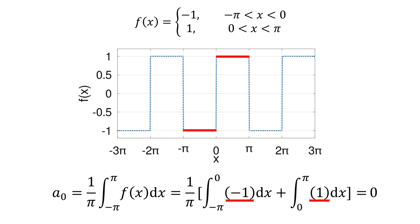The first integral gives you minus pi, and the second one results in pi, so we will have 0. Basically, a0 equals 0.